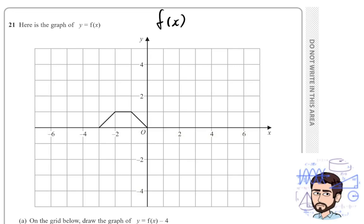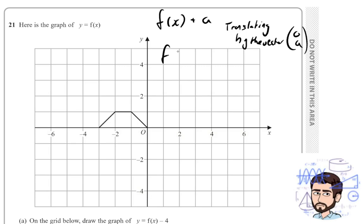So for example, if it was f of x plus a, that means that you are translating by the vector 0a, whatever a is. So if it's f of x plus 2, then you would move the shape, all of it, two spaces up. If something is happening on the inside of the brackets, plus a, then this is a translation by the vector negative a, 0. So it's actually the opposite inside the brackets and in the x direction. So for example, if it was f of x plus 2 in brackets, that would be two spaces to the left, going to the negative side from where the shape originally is.